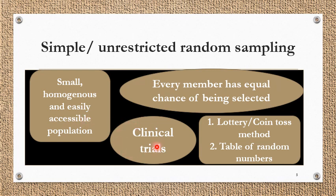Most clinical trials, when we have a small sample size, prefer this kind of simple unrestricted random sampling. There are mainly two methods by which we do it.